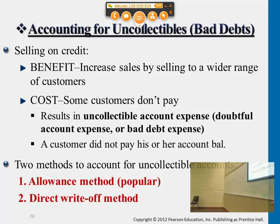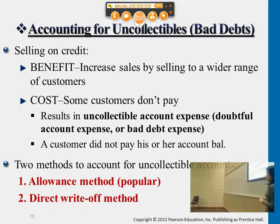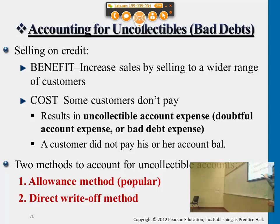There are two methods to account for these cases. For all publicly traded companies, we'll be using the first one — the allowance method — and this is our main focus for this chapter. For mid-size and small firms that are not publicly traded and don't have stocks traded in the market, they sometimes use the direct write-off method.